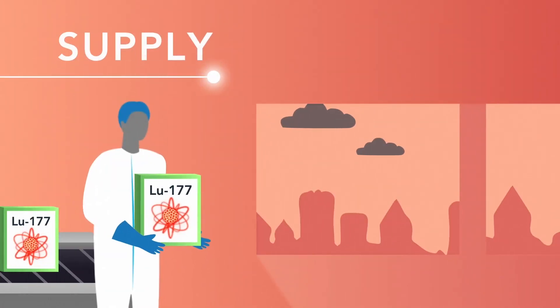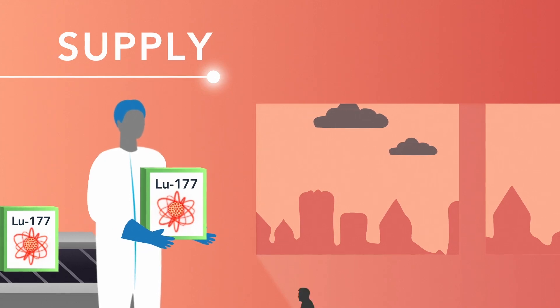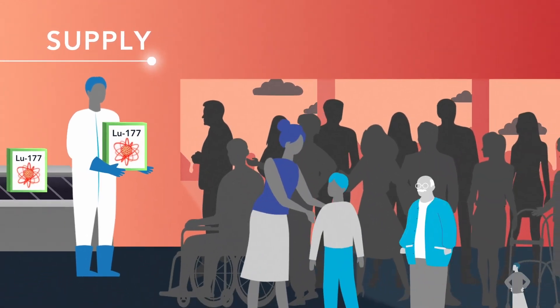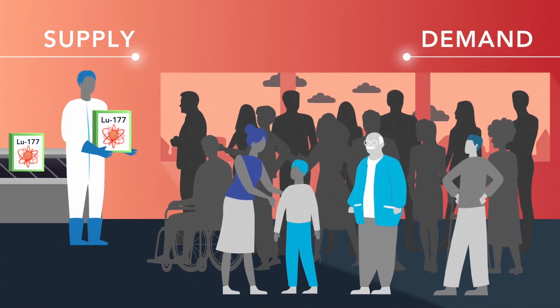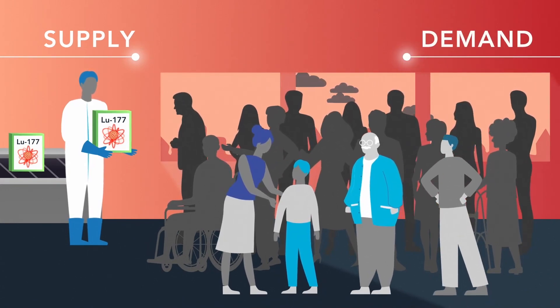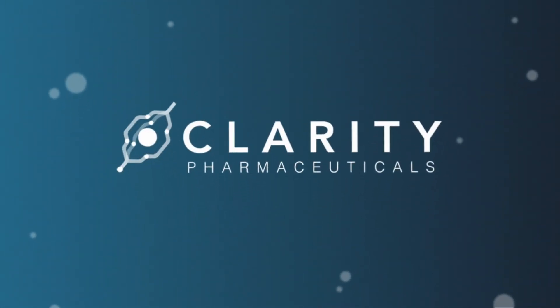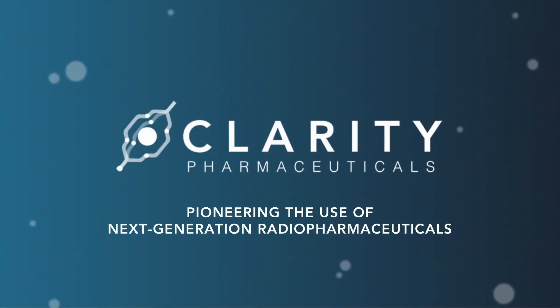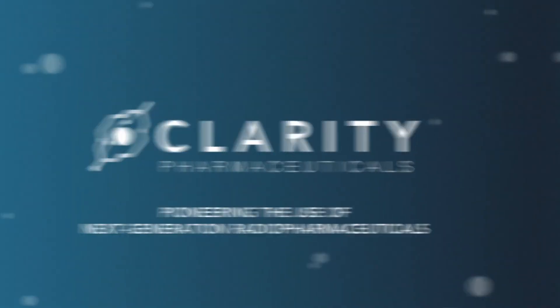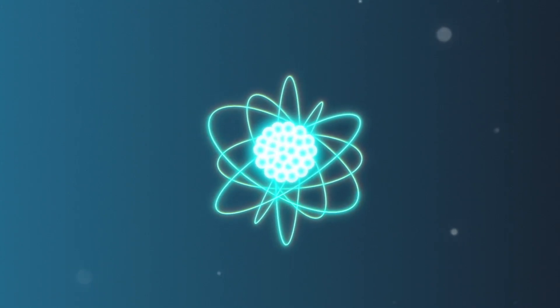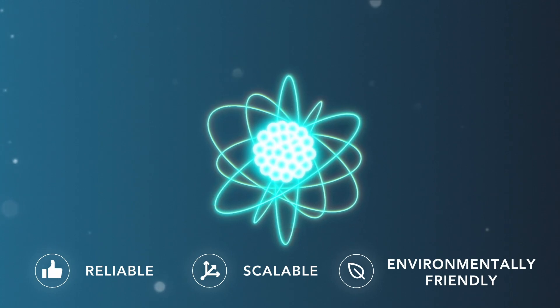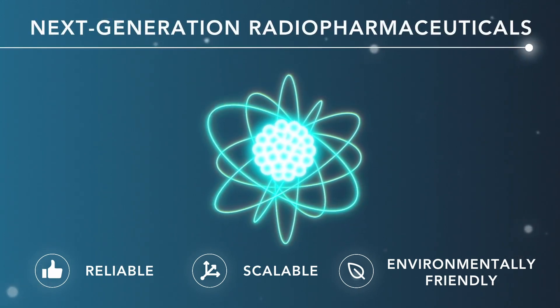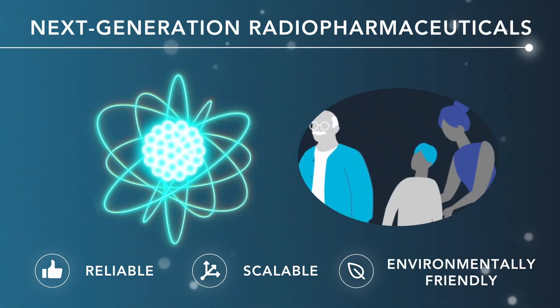While Lutetium-177 plays an important role in today's radiopharmaceutical landscape, other radionuclides may be better suited to meet the growing demand for therapeutic radiopharmaceuticals. Clarity Pharmaceuticals is pioneering the use of next-generation radiopharmaceuticals, utilizing Copper-67 to create a reliable, scalable, and environmentally friendly long-term solution to the growing need for therapeutic radiopharmaceuticals around the world to treat children and adults with cancer.